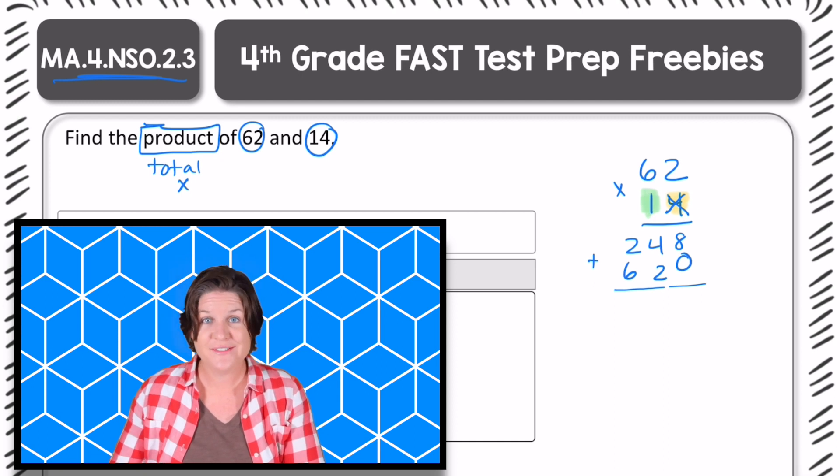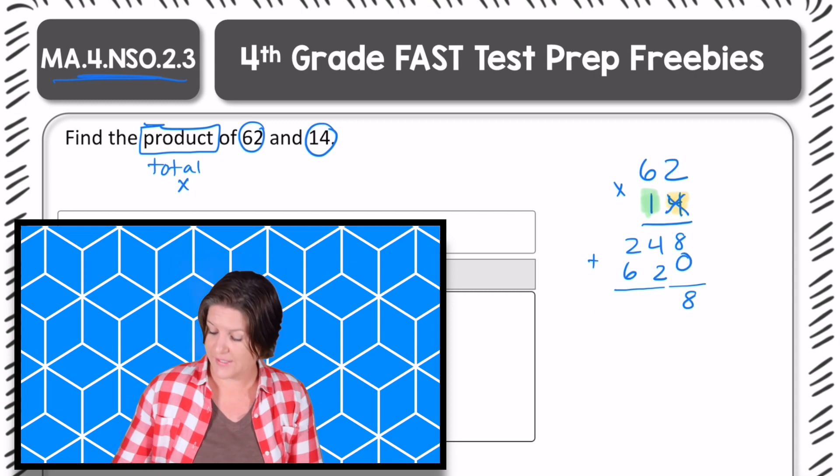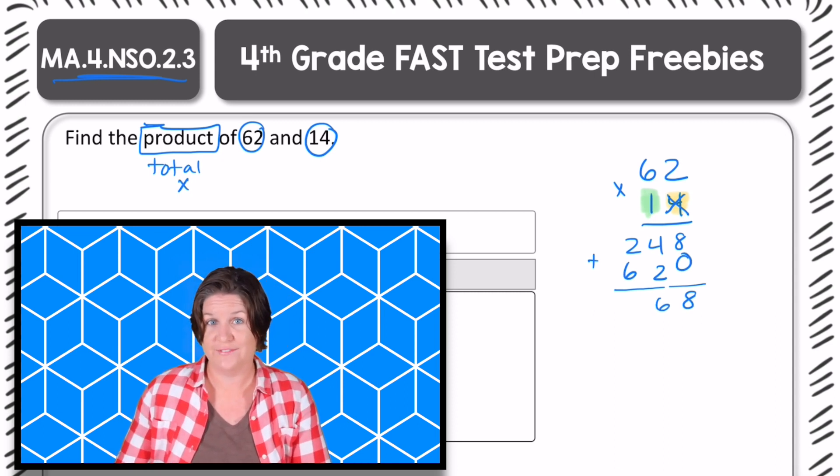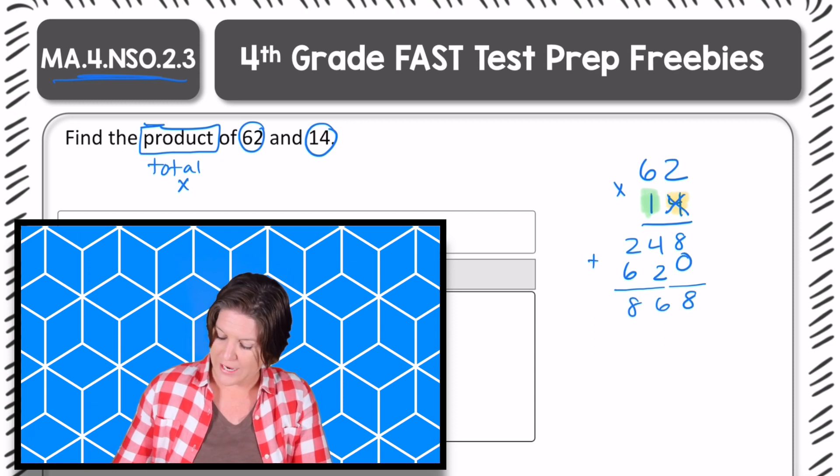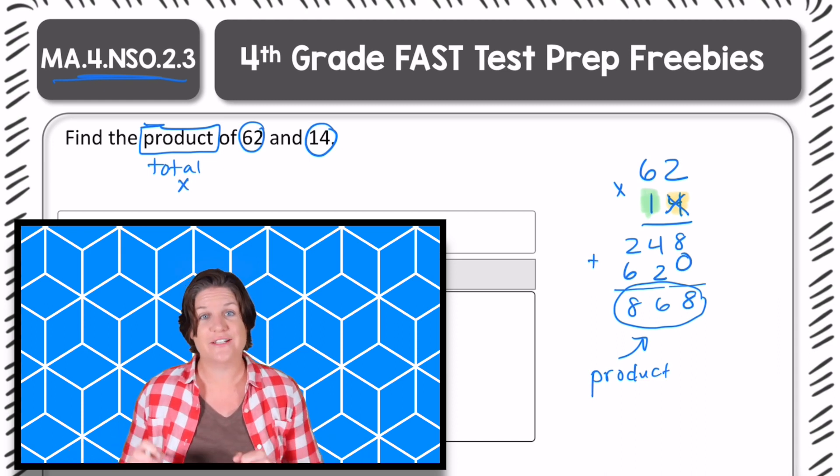So eight plus zero is eight. Four plus two is six. Good. And two plus six is what? Eight. So our product, our total when we multiplied is 868.